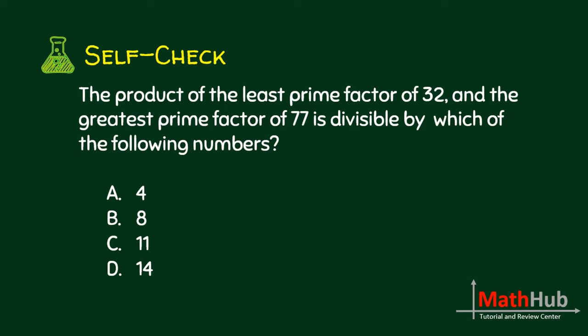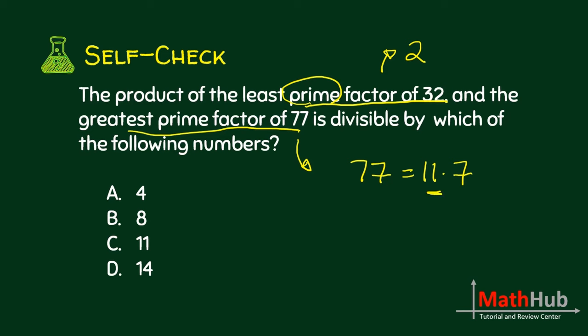Next: the product of the least prime factor of 32 and the greatest prime factor of 77 is divisible by which of the following numbers. The smallest prime factor of 32 is 2. The greatest prime factor of 77: recall that 77 is 11 times 7, so the greatest prime factor is 11. So we want the product of 2 and 11, which is 22. 22 is divisible by the answer, which is letter C.